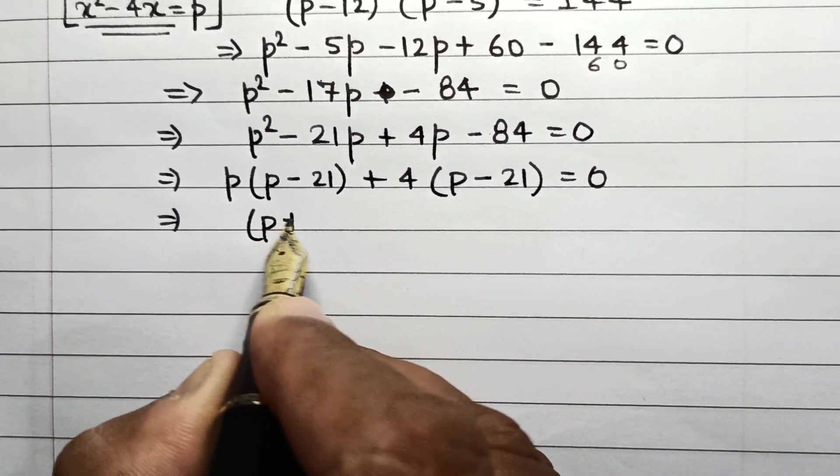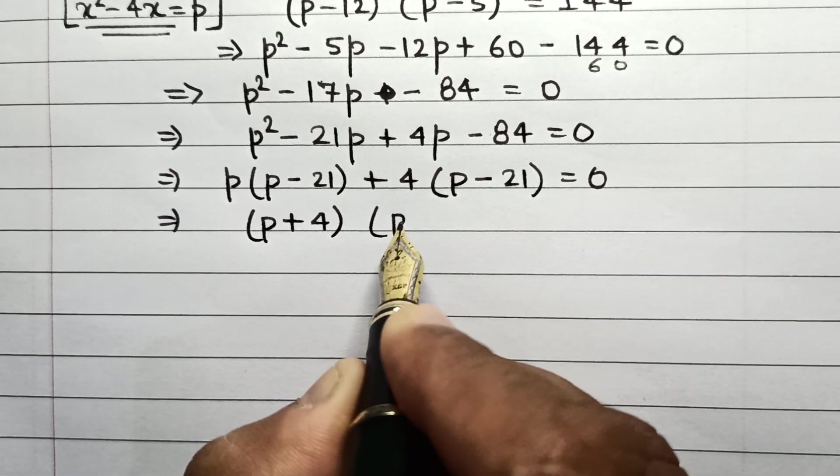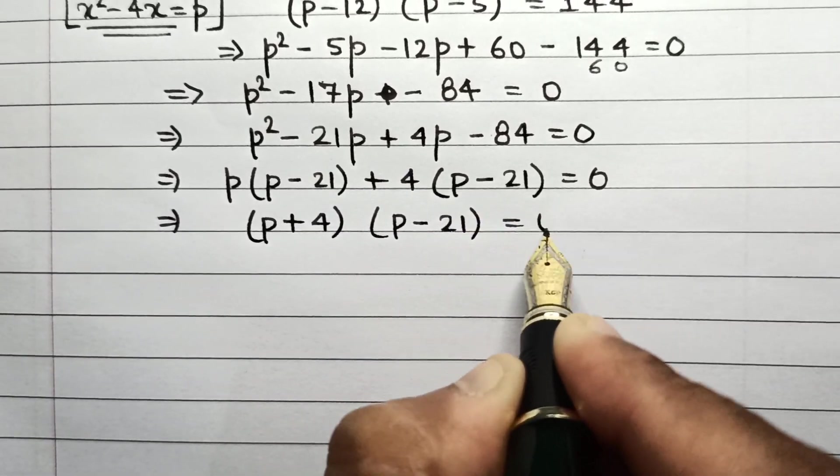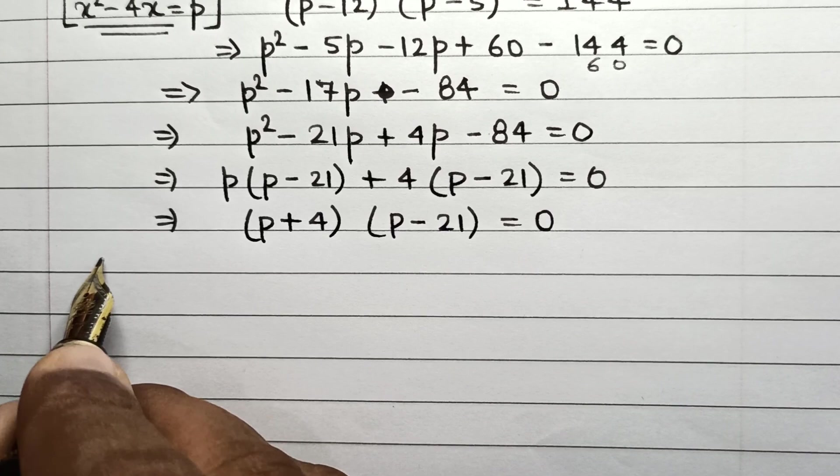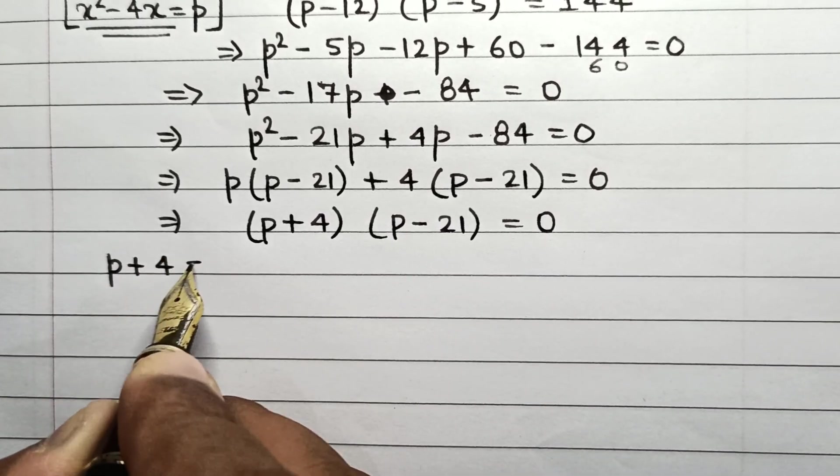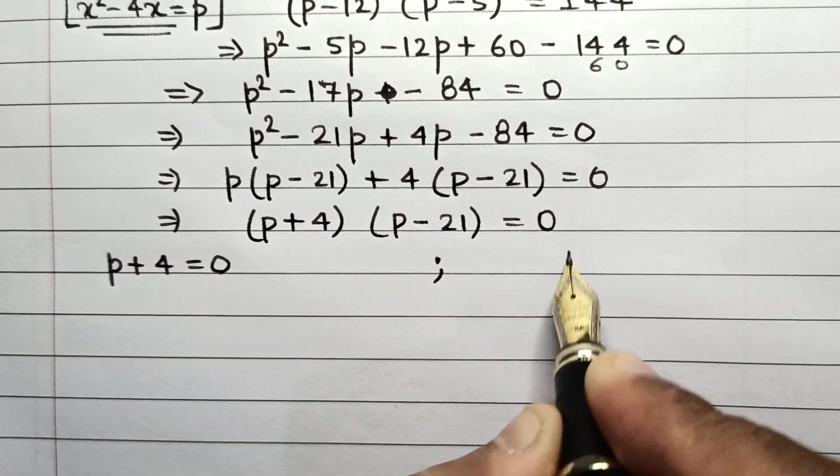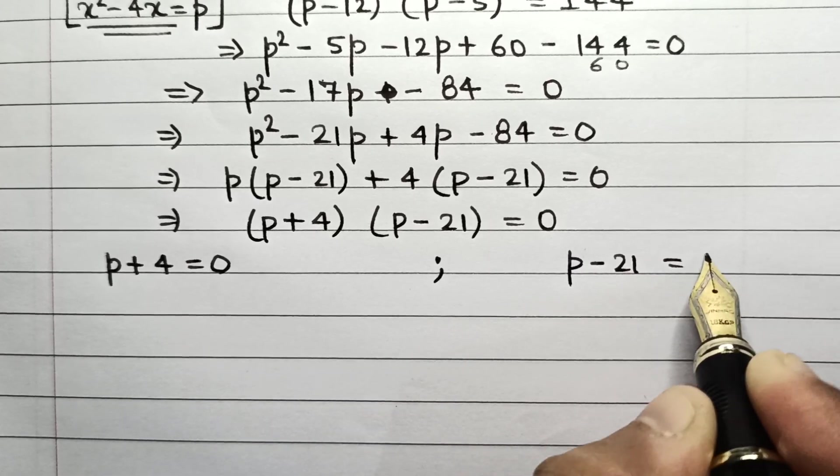So this will be (p + 4)(p - 21) = 0. So that means this can be individually written as p + 4 = 0 and p - 21 = 0.